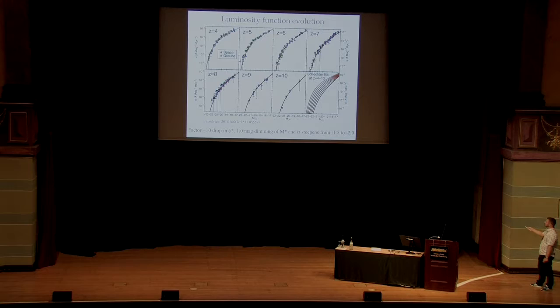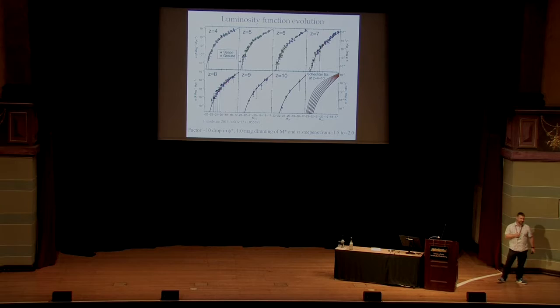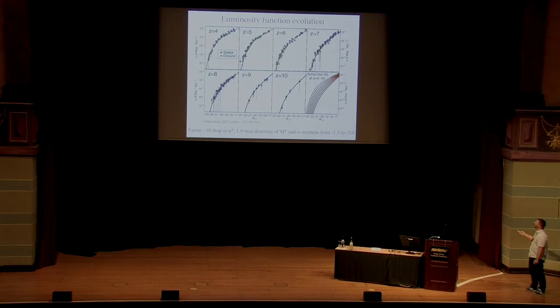And basically, the normalization drops by about a factor of 10. The characteristic luminosity doesn't change very much, maybe about a magnitude over this full redshift range. Crucially for reionization, the slope of the luminosity function is very steep, and it just continues to get steeper as we get to higher redshift. So by the time we get into the epoch of reionization at redshifts 7 and 8, the data would suggest that the slope is as steep as minus 2.